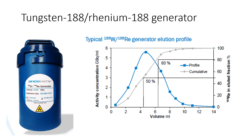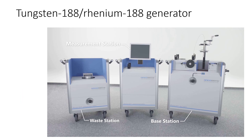The tungsten-188/rhenium-188 generator is one of my favorites and the subject of my own research. Therapeutic radionuclides such as rhenium-188 have been used to develop a skin cancer cream, Lipiodol for liver cancer, and colloids for arthritis. This generator is nearly as ideal as the technetium-99m generator, with essentially the same chemistry. There is also the Oncubita system, where radioactive ampoules produced at a generator site are plugged into a device to apply radioactive cream to patients with the appropriate type of skin cancer.